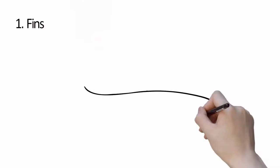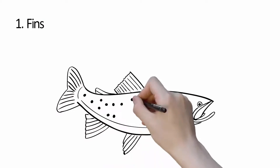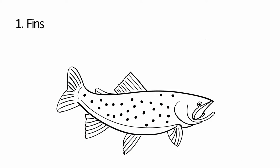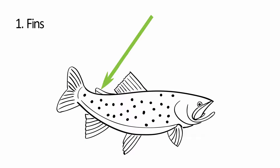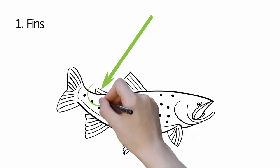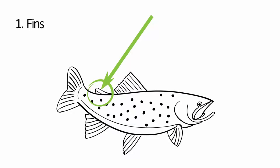First, fins. Look at the location, shape, coloration, and markings of the fins. Only trout and char species have an adipose fin — an extra fin on the back between the dorsal fin and the tail.